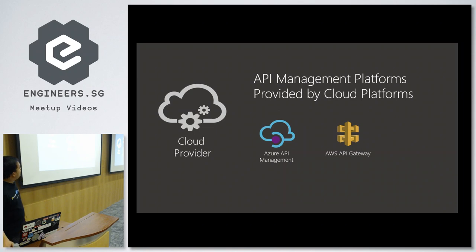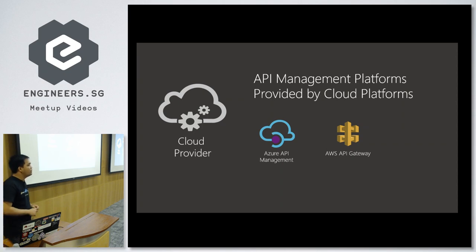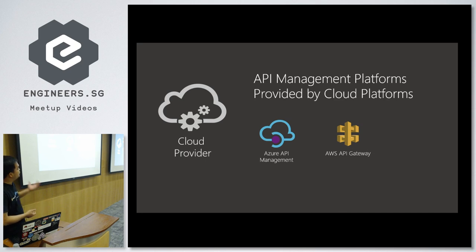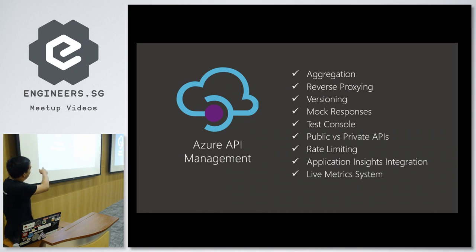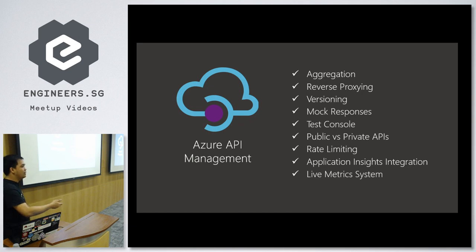A cloud provider choice for implementing an API Gateway helps you quickly bootstrap. If you're a startup that doesn't have enough resources to build a custom-tailored API Gateway, this is what you want — in just a matter of an hour, you'll be able to aggregate your APIs. The one I really like is Azure API Management, which allows you to perform API aggregation, reverse proxying, and versioning.